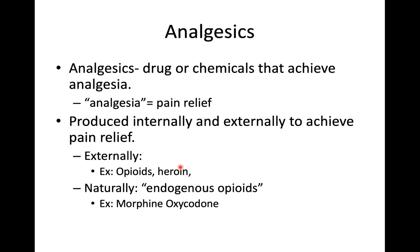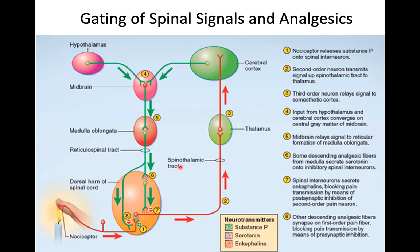Blocking the pain pathway does not mean the pain-causing agent is gone — it's still present, but the signal to the brain is being blocked. In this pathway diagram: the orange bubble is the spinal cord; the green, pink, and red bubbles are all in the brain. Substance P (green dots) is the pain-signaling chemical; serotonin is in purple; enkephalins are in red.